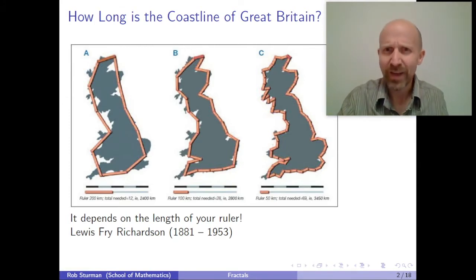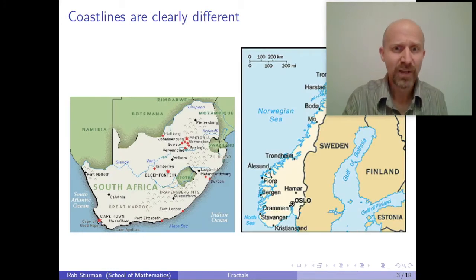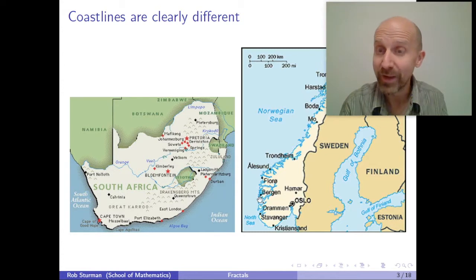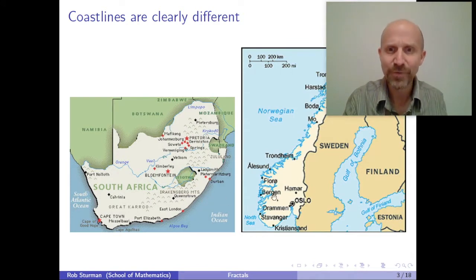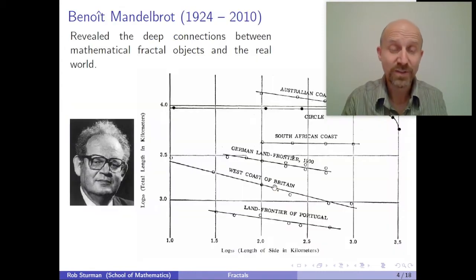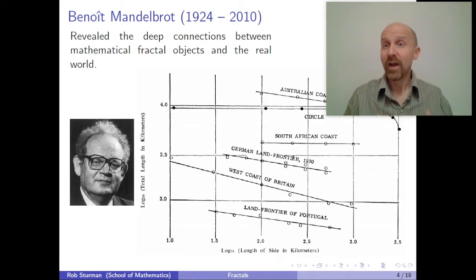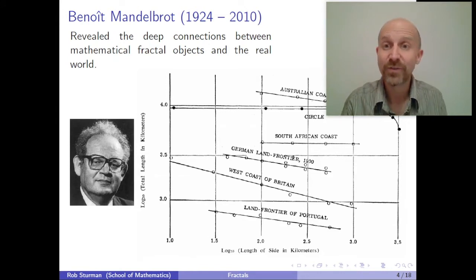There's a little bit something strange about that though because coastlines of course are different. If you think about what the coast of South Africa looks like, it's extremely smooth compared to the very, very wrinkled coastline of Norway. And so simply saying that coastlines have infinite length, if you think about all of the wrinkles in them, doesn't quite do justice to the difference between these two types of coastline.